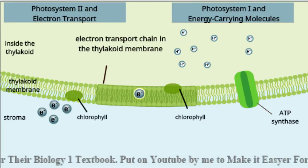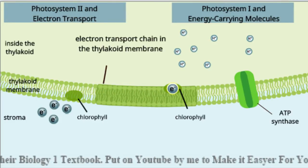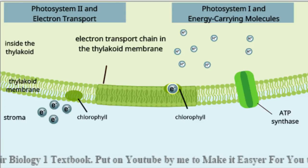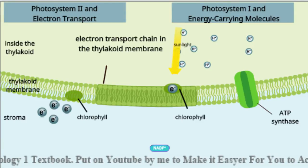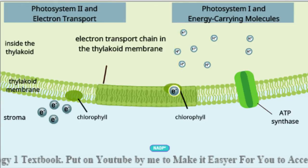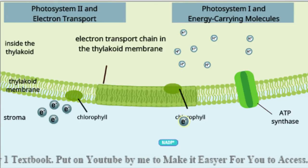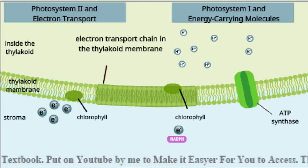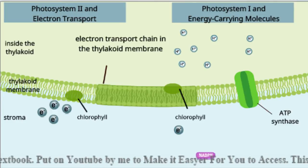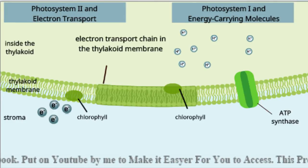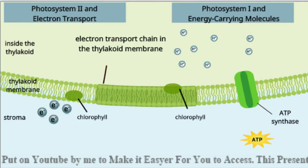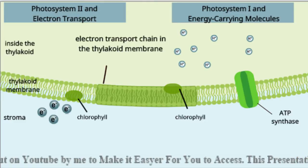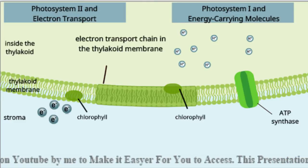Hydrogen ions are transported across the thylakoid membrane. Energy is absorbed from sunlight. NADPH is produced when electrons are added to NADP. Hydrogen ions diffuse through a protein channel. ADP is changed into ATP when hydrogen ions flow through ATP synthase.